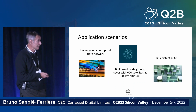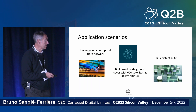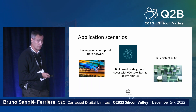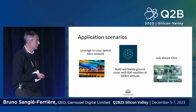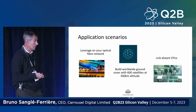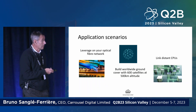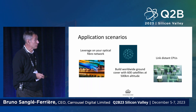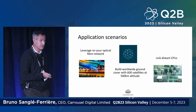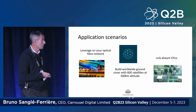Application scenarios for this technology include leveraging your existing optical fiber network — for instance, a QKD network already built in London could potentially be used. You can also build a worldwide ground-cover network with 600 satellites at 500 kilometers altitude, and you can link distant CPUs.